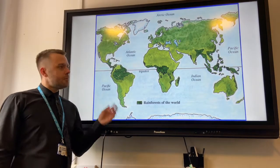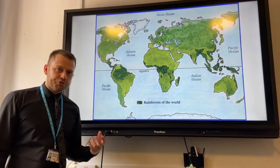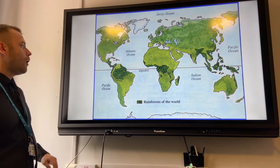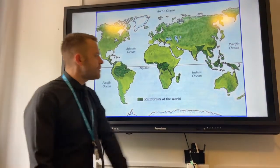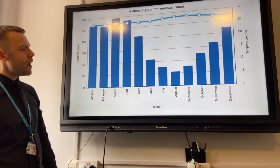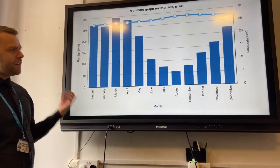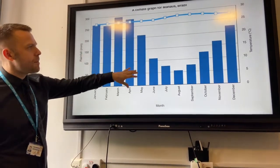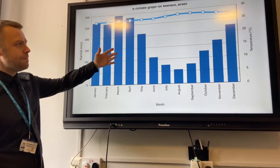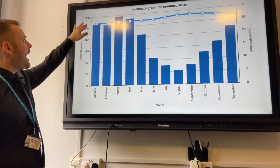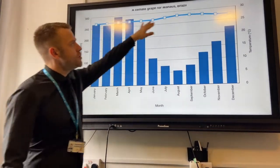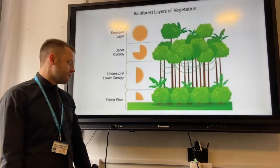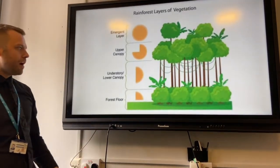We're going to be looking at the structure of tropical rainforests and reasons for their high biodiversity. Tropical rainforests are found around the equator — perfect conditions for high biodiversity. The blue bars represent the high precipitation, and the high temperatures are represented by the line, which is about 27 degrees all year round.